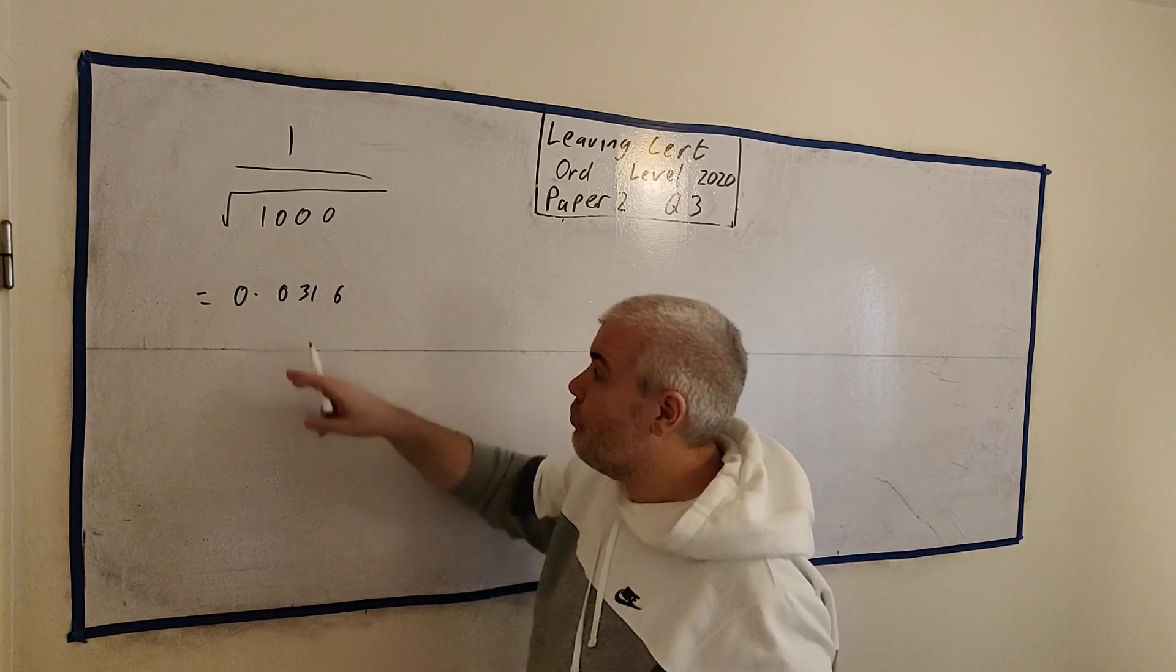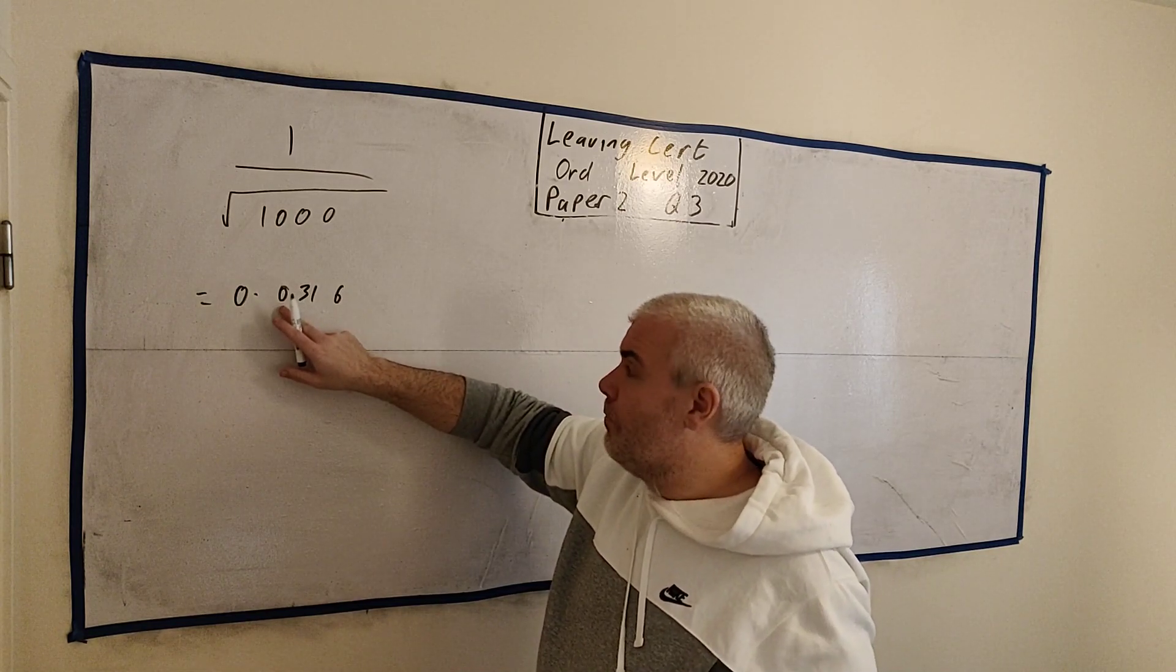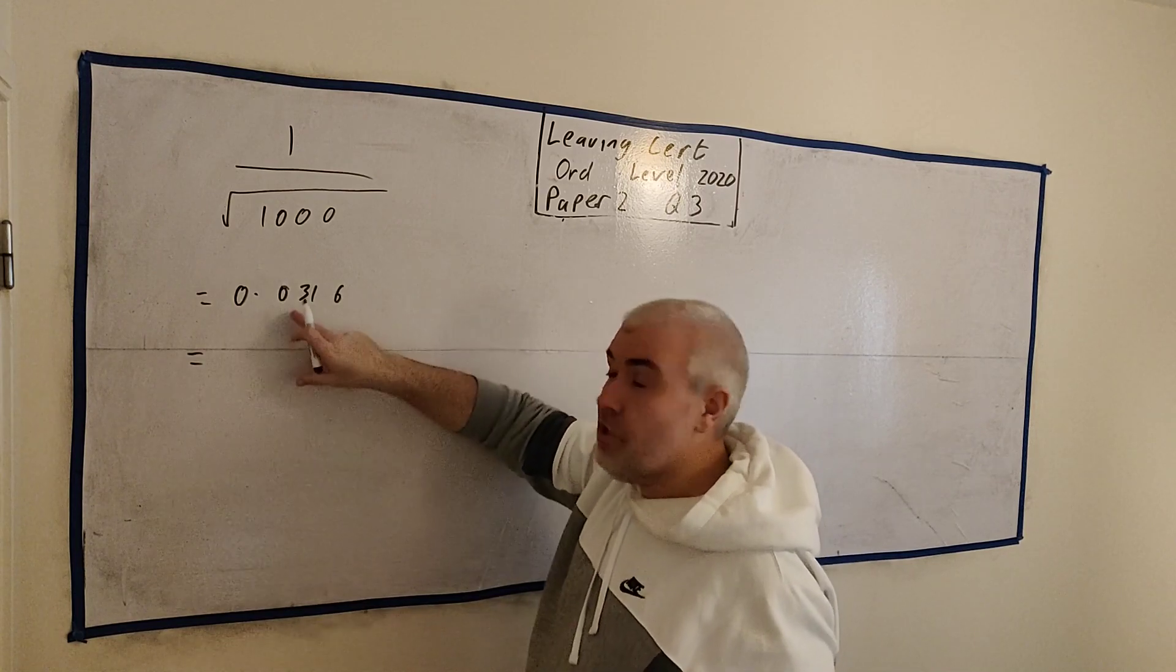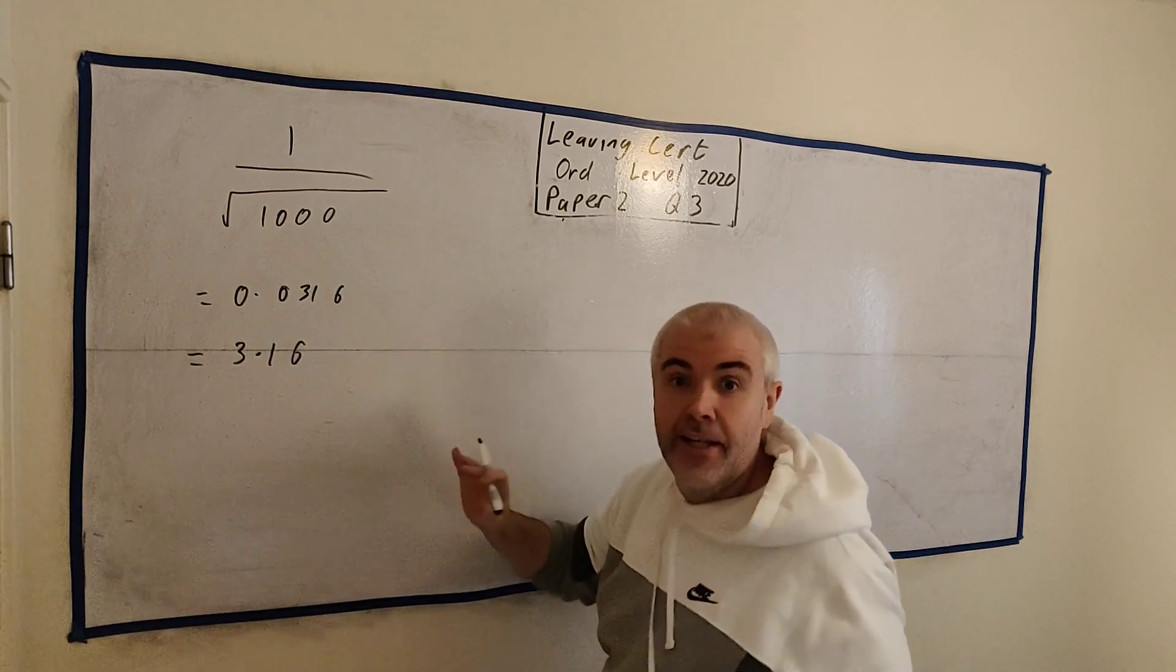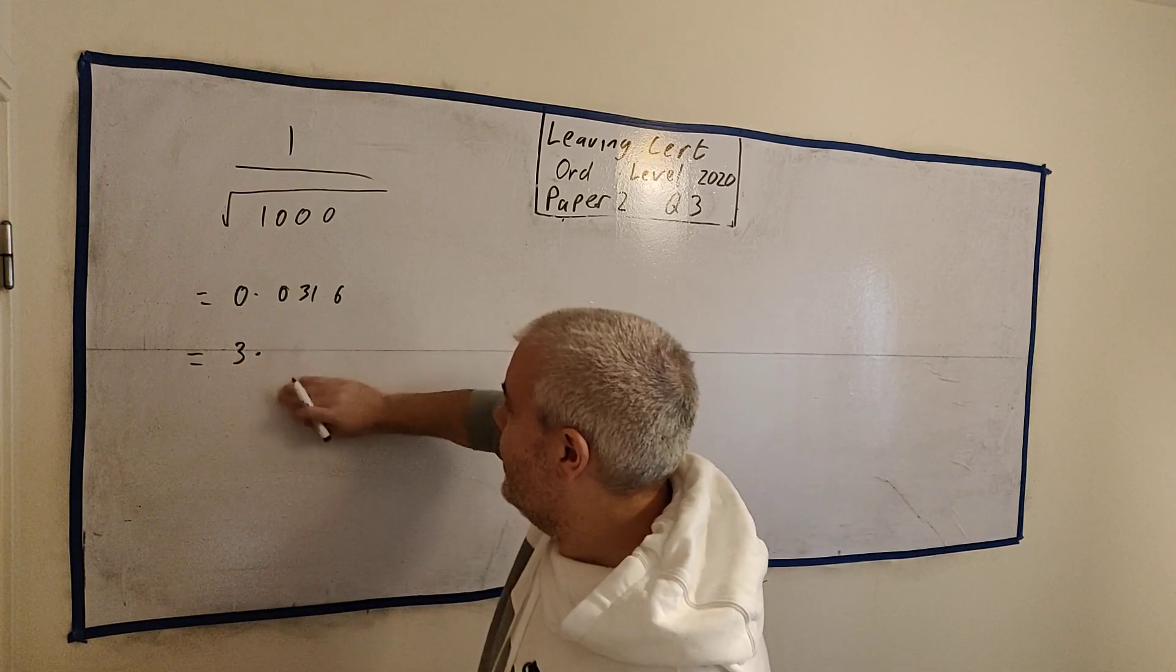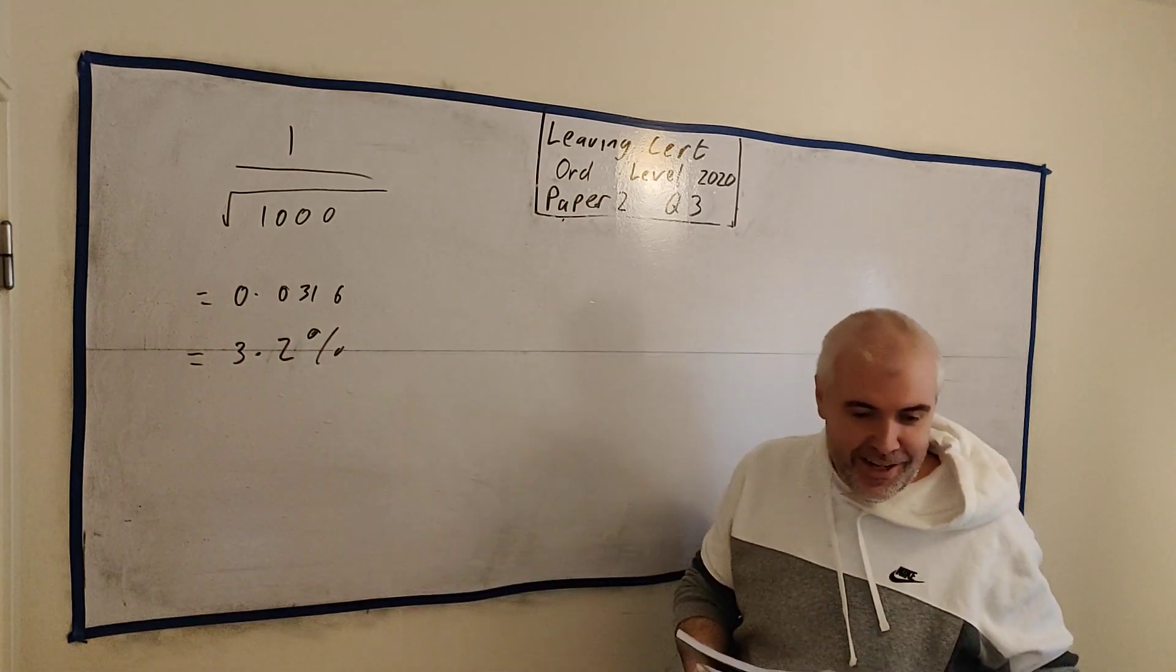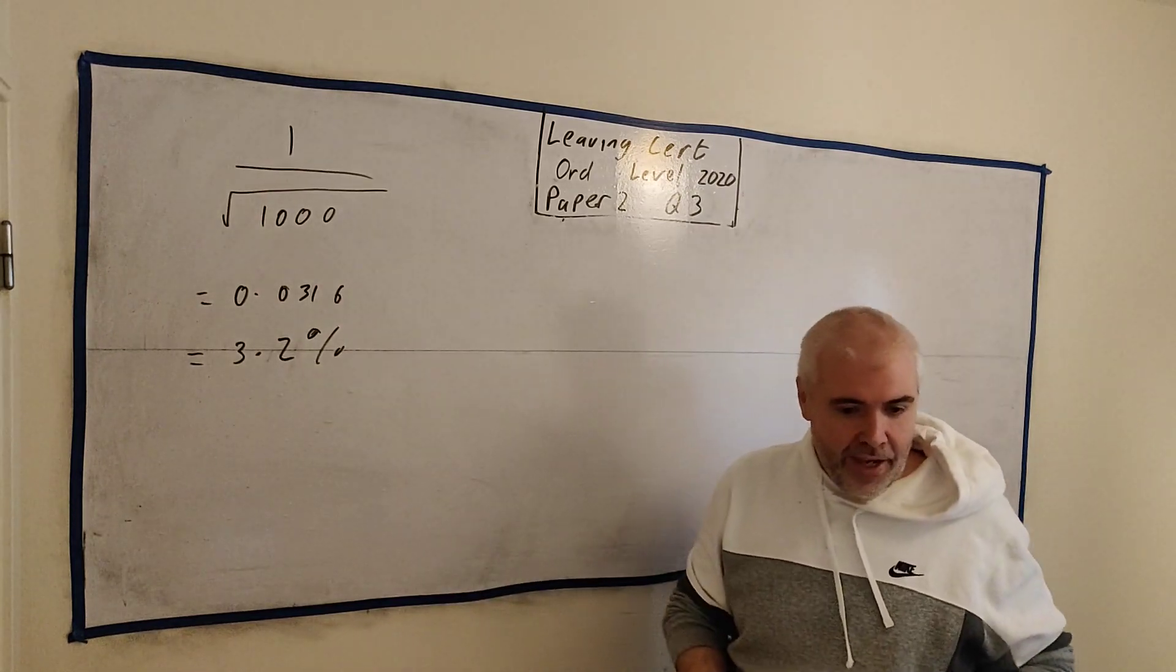In this case, it's a thousand, and if we do this on a calculator, we get out the answer 0.0316, and this is going on. Now, it tells us to round it off to one decimal place. The problem is they didn't ask you to round this number. They asked you to round off the percentage number, which is 100 times bigger than this. 3.16, and it continues on. They want this rounded off to one decimal place. So it's 3.2%.